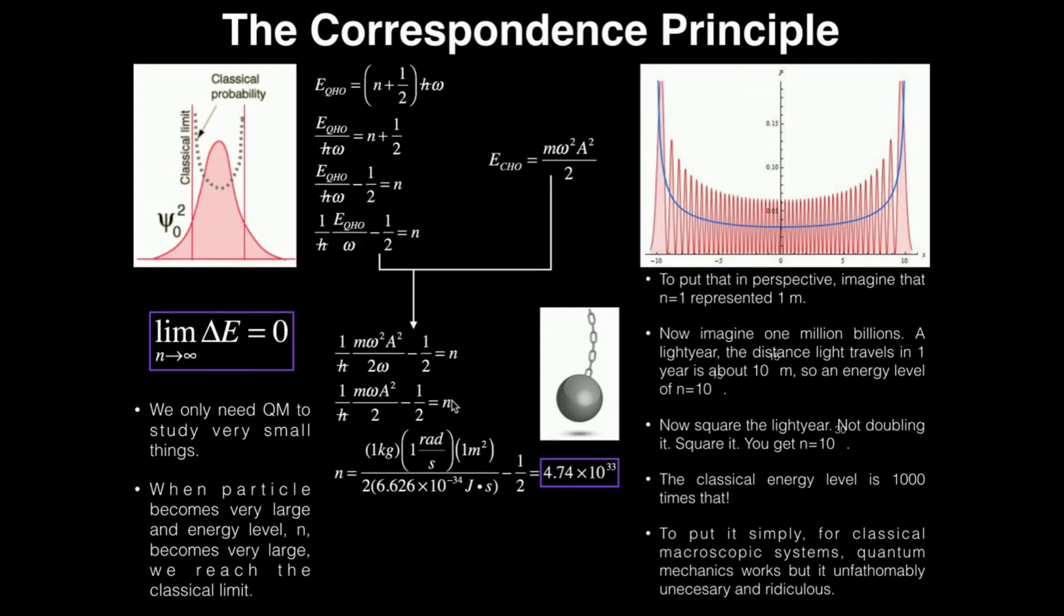What is my energy level? Let's assume we've got a wrecking ball that's one kilogram, angular velocity omega is one radian per second, and the amplitude is one meter. So my n is one kilogram times one radian per second times one meter squared divided by two h-bar. It doesn't matter if you use h or h-bar, minus a half that doesn't do anything. The energy level is on the order of 4.7 times 10 to the 33rd.